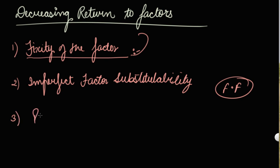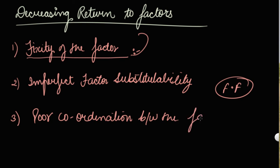The third cause is poor coordination between the factors. If your fixed factors are overutilized, and at some point you do not have enough fixed factors to fulfill your variable factors' needs, there will be poor coordination between the factors. With this, we complete the causes for your increasing and diminishing returns to a factor.